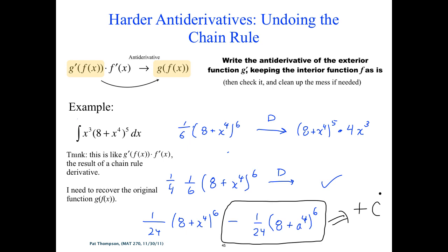The goal is that when you do this enough, you don't need the step-by-step structure. You'd just look at it and see: this is undoing the chain rule, I'm going to raise it to the 6th, I need a 1/6, but the derivative gives me 4x cubed so I need a 1/4 — and just write it down the first time. That's what we're going for.